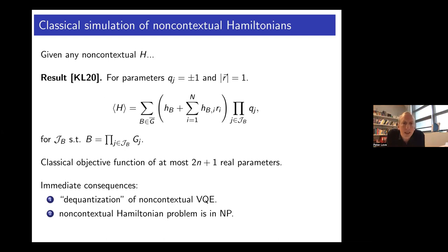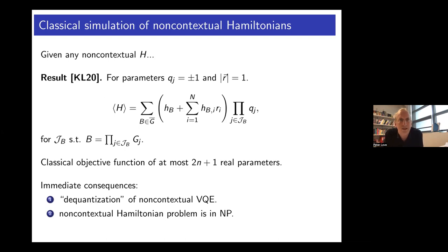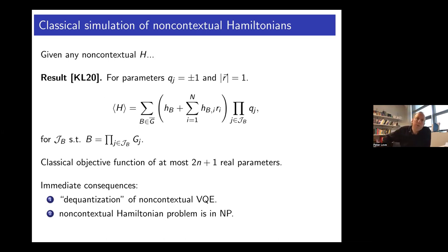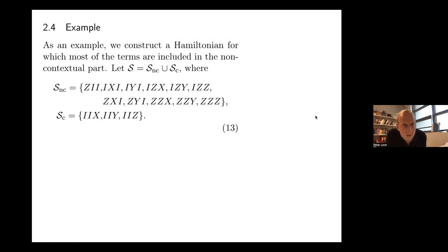This is a rather roundabout way of discovering new classical algorithms, but in our case it only applies to a particular subset of Hamiltonians. It also shows that the non-contextual Hamiltonian problem is in NP in complexity-theoretic terms, because I can tell you efficiently what the ground state energy is by telling you the values of this small number of parameters. So the punchline is that we know how to build a classical hidden variable model for these non-contextual Hamiltonians. But let's go through a little example. Let's take a three-qubit Hamiltonian — here's the non-contextual set of terms and a remaining contextual set, which is just X, Y, and Z on the third qubit.